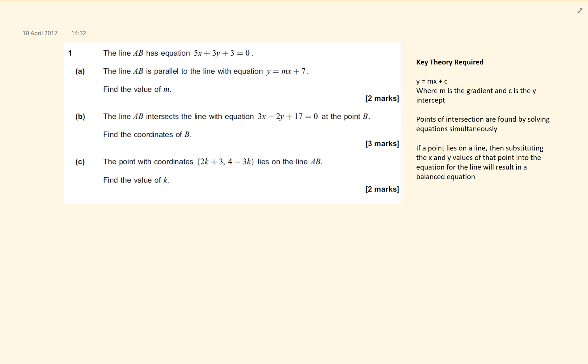Mine is 5x plus 3y plus 3 equals 0. So 5x plus 3y plus 3 equals 0. This is part a of the question.